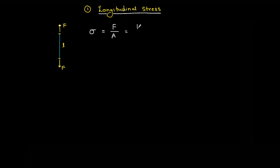Sigma is given as force per unit area. If the area of cross-section is A or the radius is R, then sigma equals F divided by pi R squared, where R is the radius of the wire. This stress is the cause of the deformation.